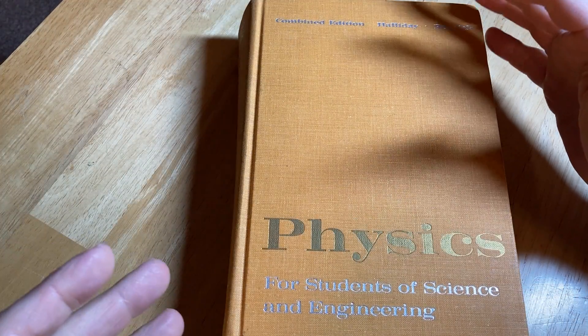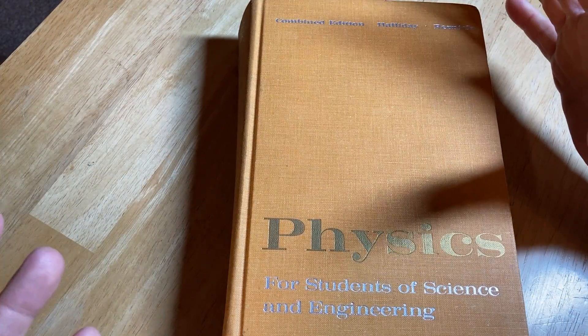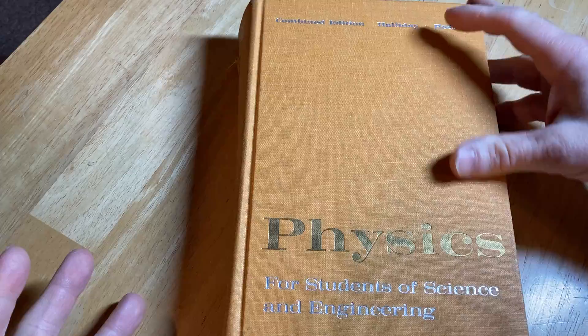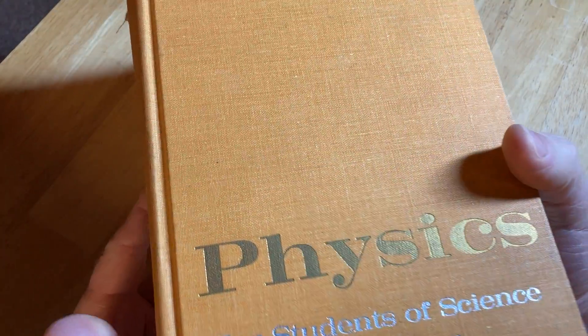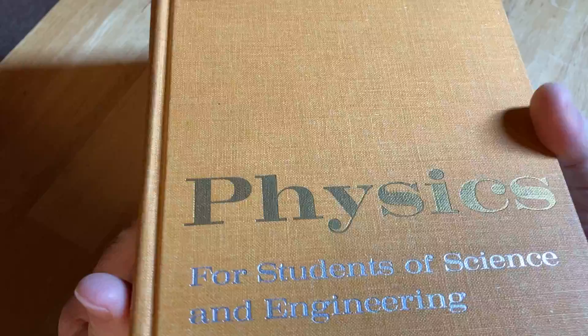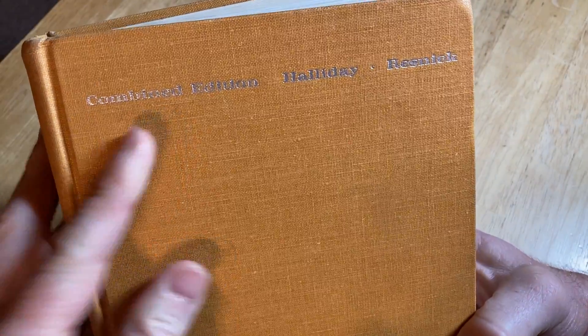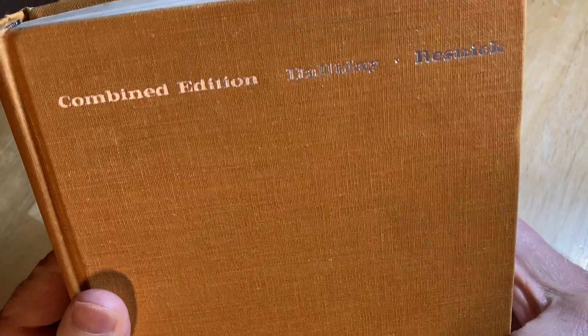Here we have a physics book which has withstood the test of time. This book has been around for a very long time. It's called Physics for Students of Science and Engineering, and this is the combined edition by Halliday and Resnick.